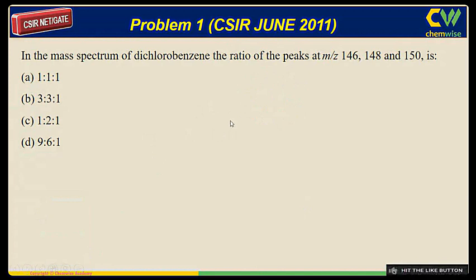We have to look at the mass spectrum. The peaks are given. Let's say this is dichlorobenzene, Cl-Cl here. The mass of this molecule is 146, the molecular peak.